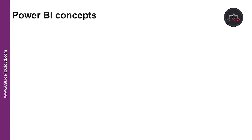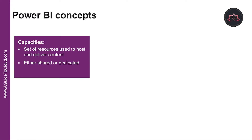Let's understand Power BI concepts. The major building blocks of Power BI are datasets, reports, and dashboards. They are all categorized into workspaces and they are created on capacities. Capacities are a core Power BI concept representing a set of resources used to host and deliver your Power BI content. Capacities are either shared or dedicated. A shared capacity is shared with other Microsoft customers, while a dedicated capacity is fully committed to a single customer. Dedicated capacities require a subscription. By default, workspaces are created on a shared capacity.